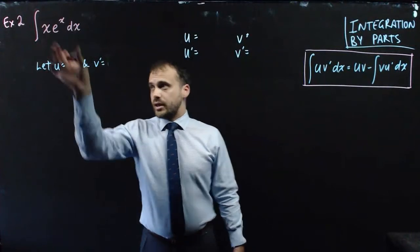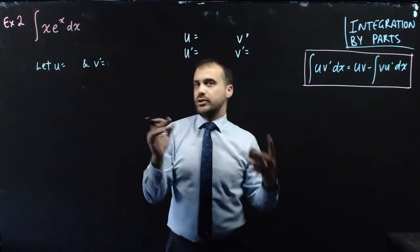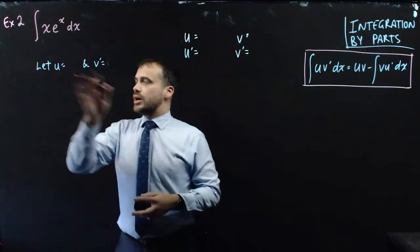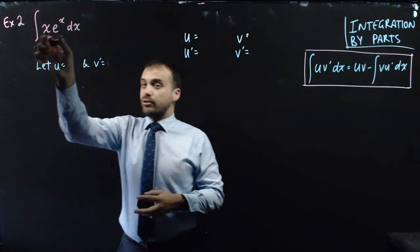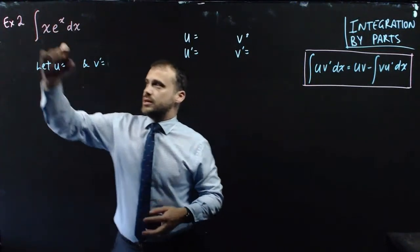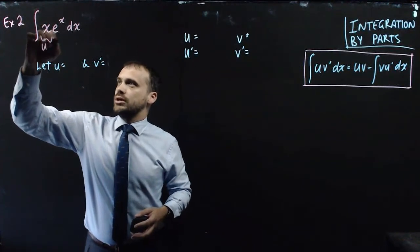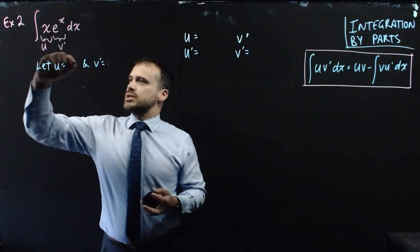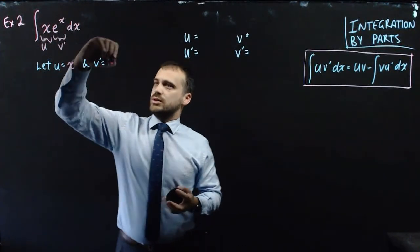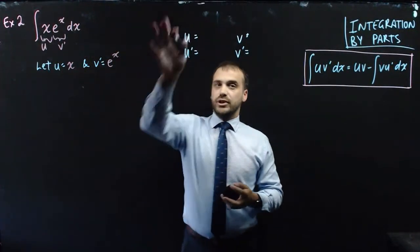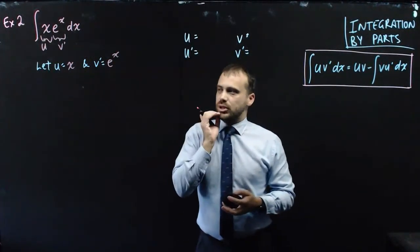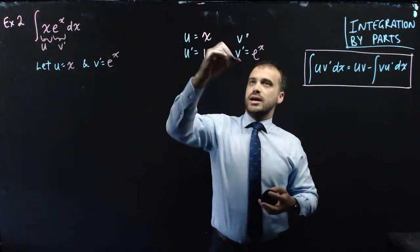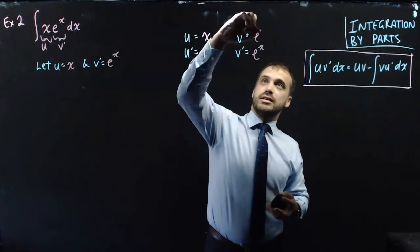Let's do another one. Second example: again it's an integral of a product of functions — x times e to the x. So there's a function here which we can call u, and a function here which we can call v'. We know u equals x and v' equals e to the x. Filling in the table: u equals x, u' equals 1, v' equals eˣ, and since the integral of eˣ is eˣ, v equals eˣ. This is going to be really straightforward.